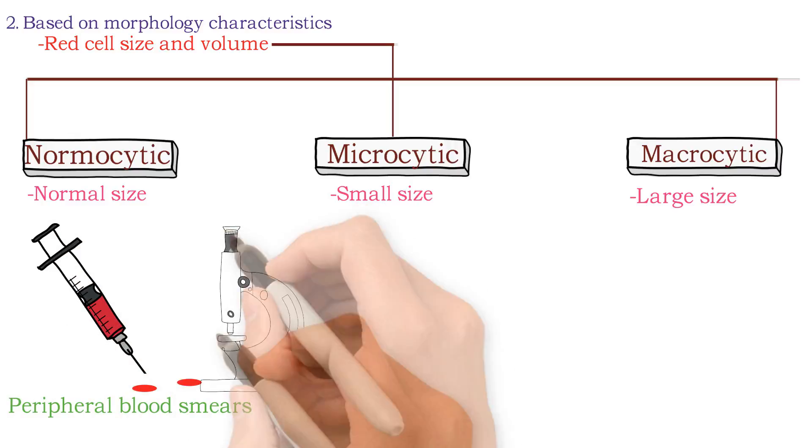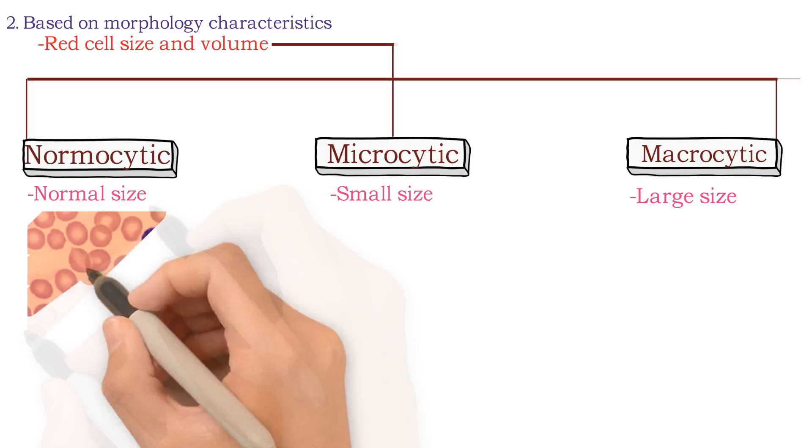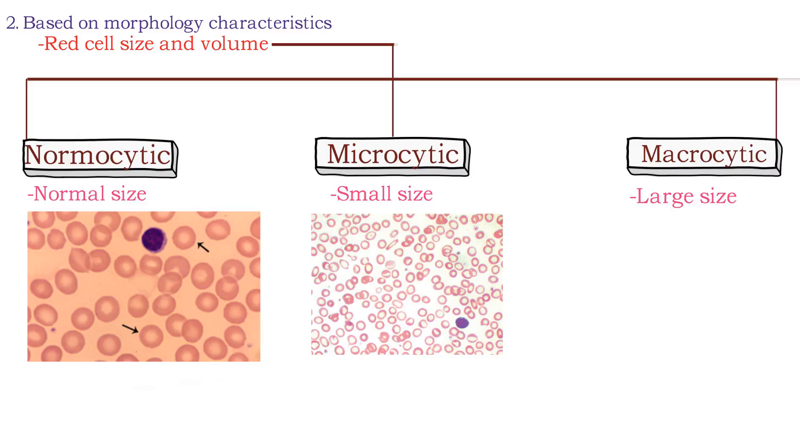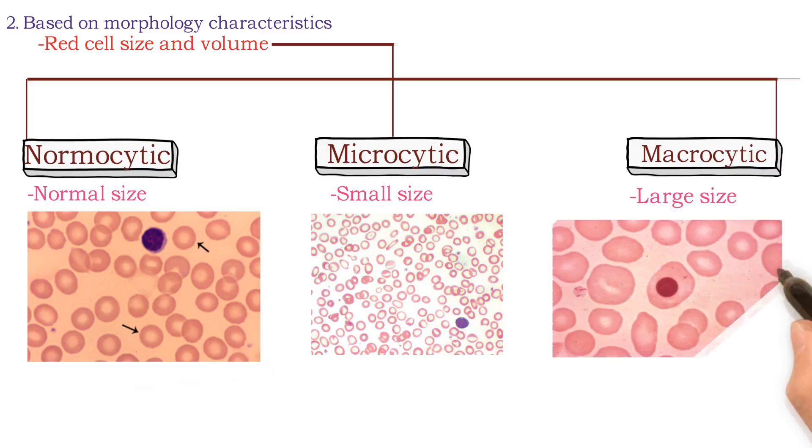In peripheral blood smear, when we observe from microscope, red cells are normal size and normochromic in general. Microcytic hypochromic anemias are caused by disorders of hemoglobin synthesis, most often iron deficiency, and red cells are small and pale.